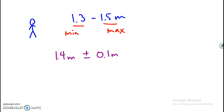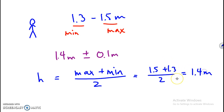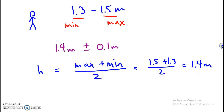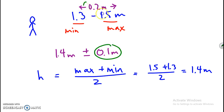We just used two formulas. The first formula: my height equals the average of the max and the min. If I plug in 1.5 and 1.3, I get 2.8 on top, which when divided by 2 is 1.4. The other equation is the half-range method — these values from 1.3 to 1.5 span a range of 0.2, so the uncertainty is half the range.